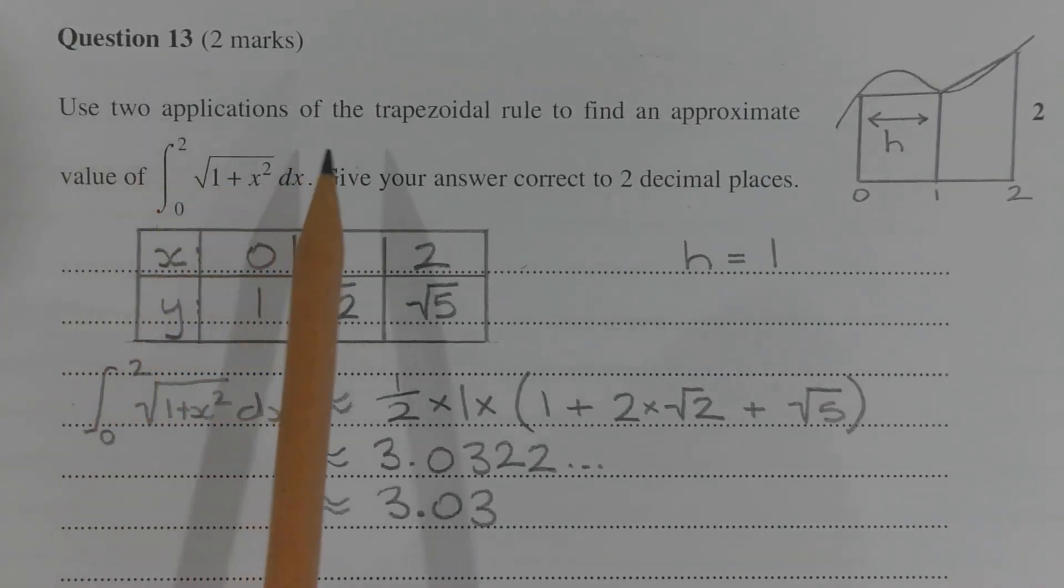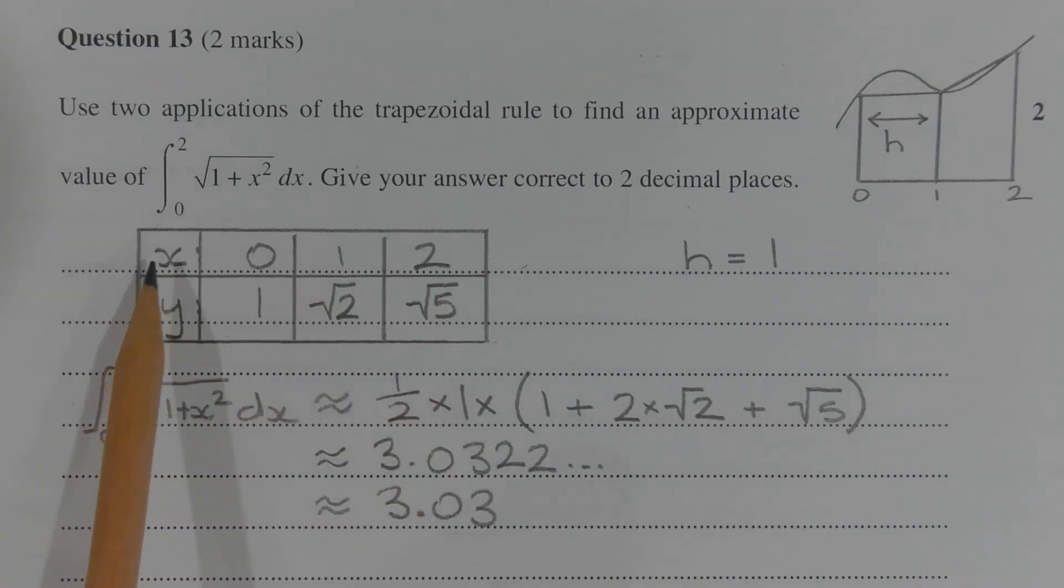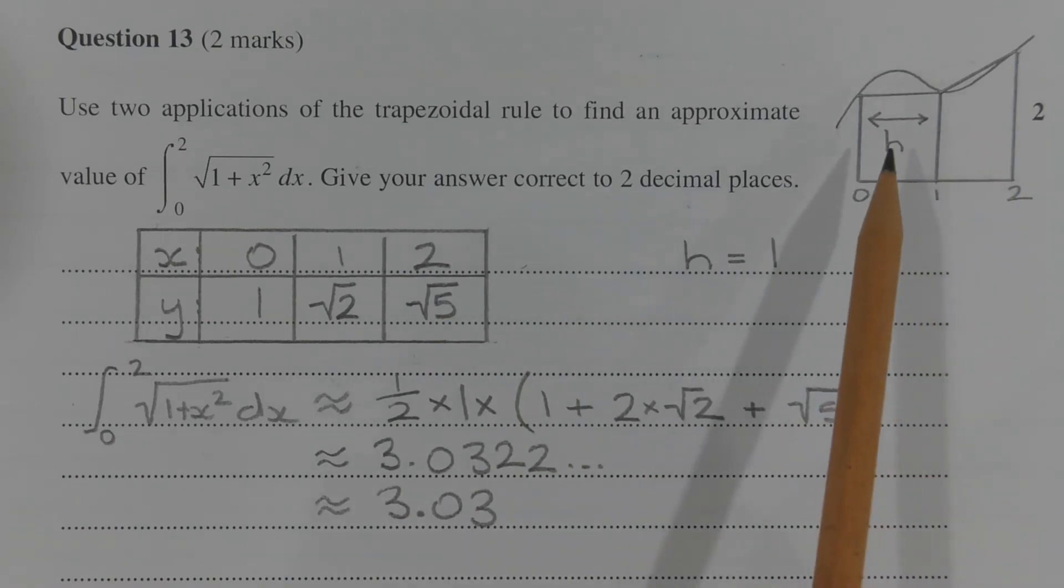Two applications of the trapezoidal rule requires three function values equally spaced from x equals 0 to x equals 2. So this gives us two trapeziums where the height of each trapezium is equal to 1, hence h equals 1.